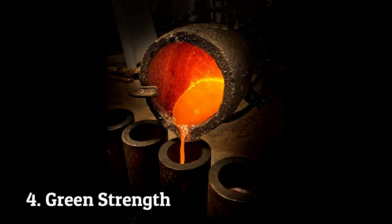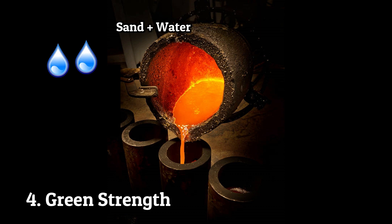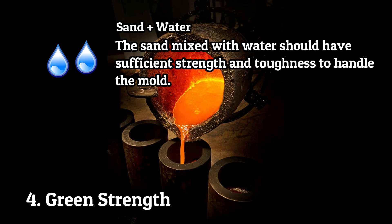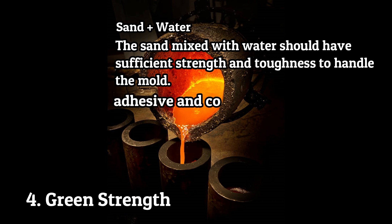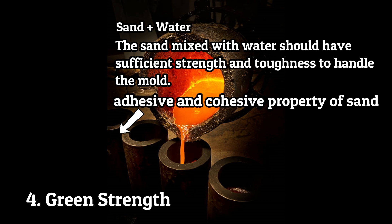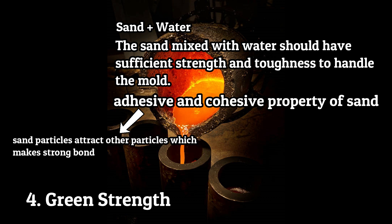Green strength is known as the strength of sand mold mixed with water. The sand mixed with water should have sufficient strength and toughness to handle the mold. Green strength of sand mostly depends on the adhesive and cohesive properties of sand. Adhesiveness is the property by virtue of which the sand particles attract other particles, which makes a strong bond between sand, clay, and moisture particles. It is desirable for a strong mold.